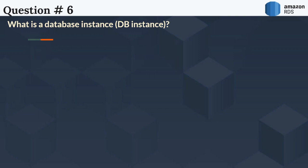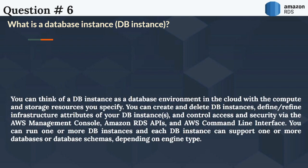The next question is: What is a database instance, or DB instance? You can think of a DB instance as a database environment in the cloud with the compute and storage resources you specify. You can create and delete DB instances, define and refine infrastructure attributes, and control access and security via the AWS management console, Amazon RDS APIs, and AWS command line interface. You can run one or more DB instances, and each DB instance can support one or more databases or database schemas, depending on engine type.